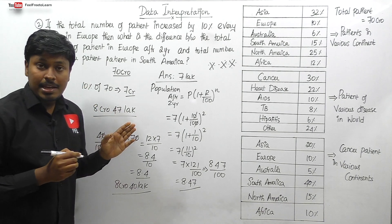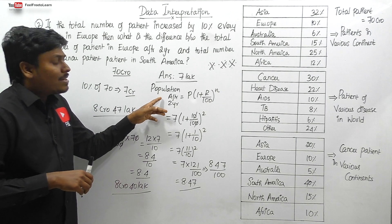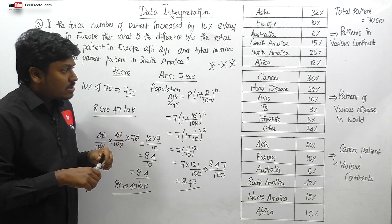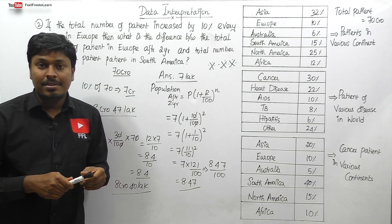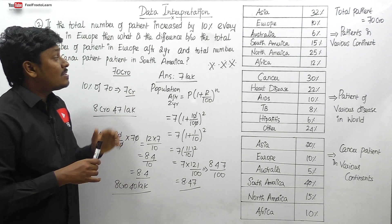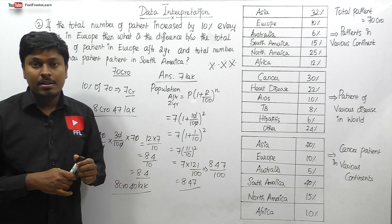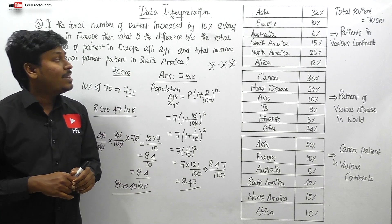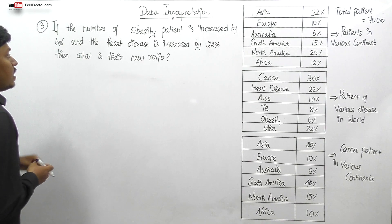This is one of the most important DI questions. If you're new to this formula, take note of it or watch the simple interest and compound interest videos on the YouTube channel. The key concepts are: interpreting decimal crore values correctly, using the compound interest formula for population increase and decrease, and calculating differences.